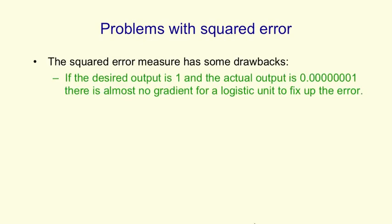If the desired output is 1 and the actual output of a neuron is one billionth, then there's almost no gradient to allow a logistic unit to change. It's way out on a plateau where the slope is almost exactly horizontal, and so it will take a very long time to change its weights, even though it's making almost as big an error as it's possible to make.